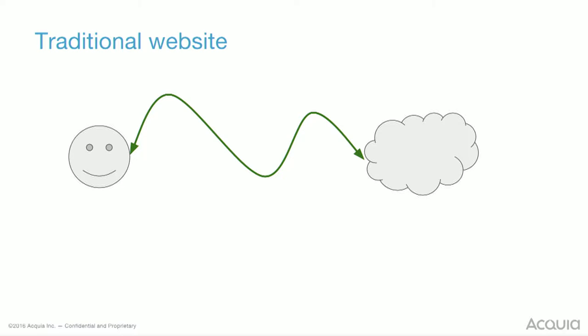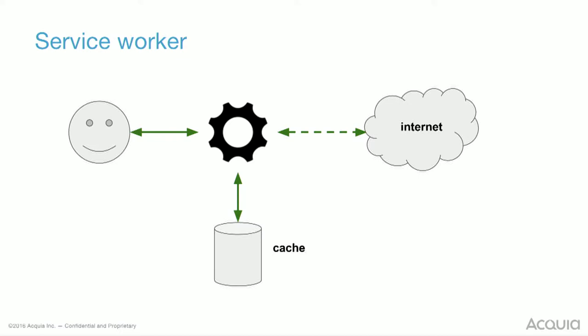So as I said earlier, traditional website with internet, guy's pretty happy. And then he has no internet — now he's sad. What we do is introduce this concept of a service worker, which acts as a broker between yourself and the internet. And why that's kind of cool is you can also maintain this cached version off to the side as well, so that when you do have no internet, the cache comes in. The background synchronization can retrieve recent news items and store that in the cache so that when you come online with no internet, you still get a representation of the site. It may not be perfectly up to date, but it would be up to date enough.